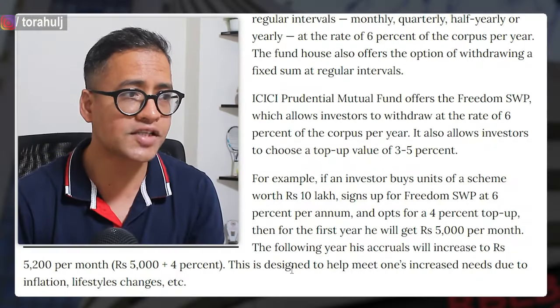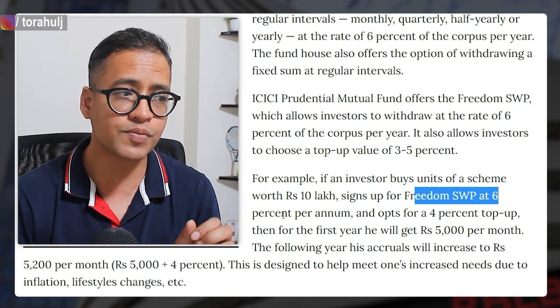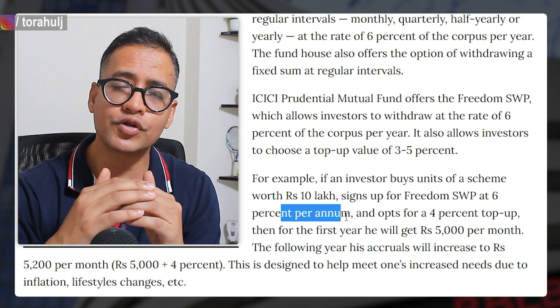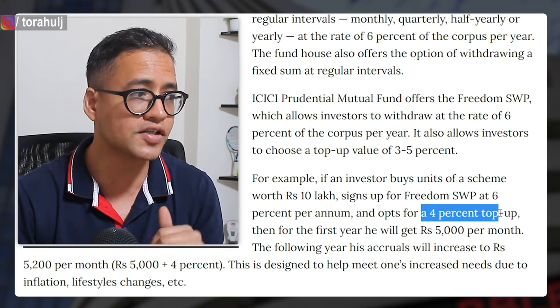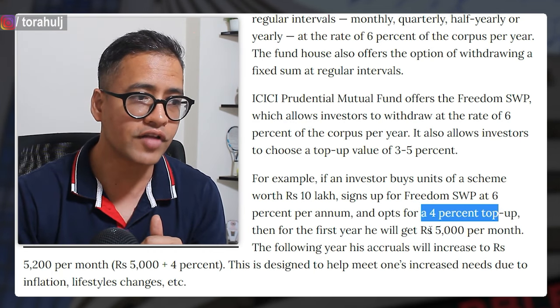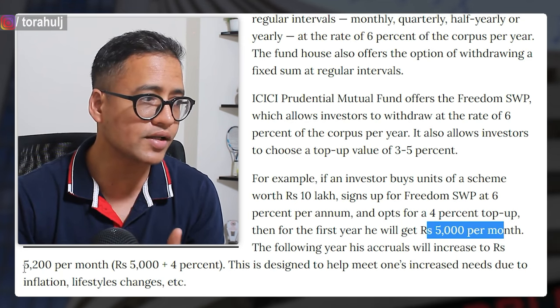Another good option that ICICI Prudential has offered recently is not only can you do a withdrawal of 6% per annum, you can also increase this withdrawal every year by a certain percentage. For example, a 4% top-up means first year you withdraw 5,000 rupees per month, and next year you increase it by 4% to 5,200 per month, adjusting for inflation. These advanced SWP options are not available for every mutual fund yet, but more will likely join soon.